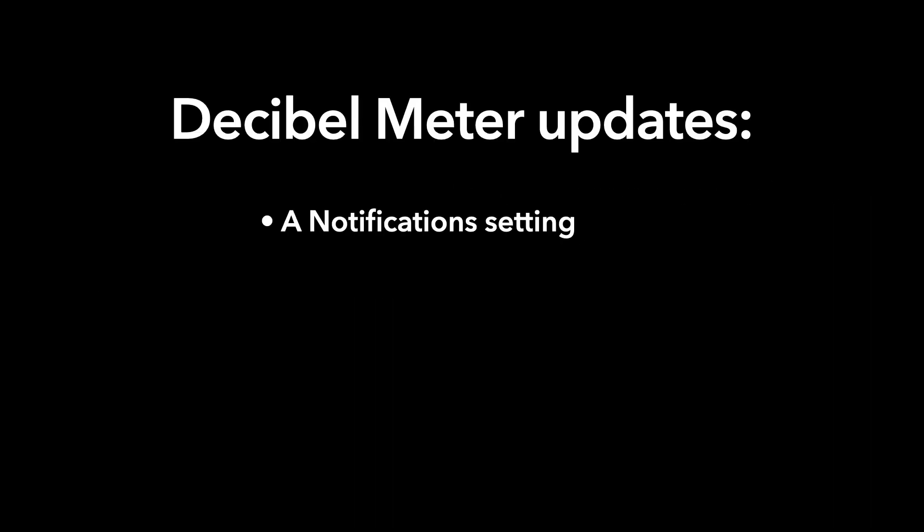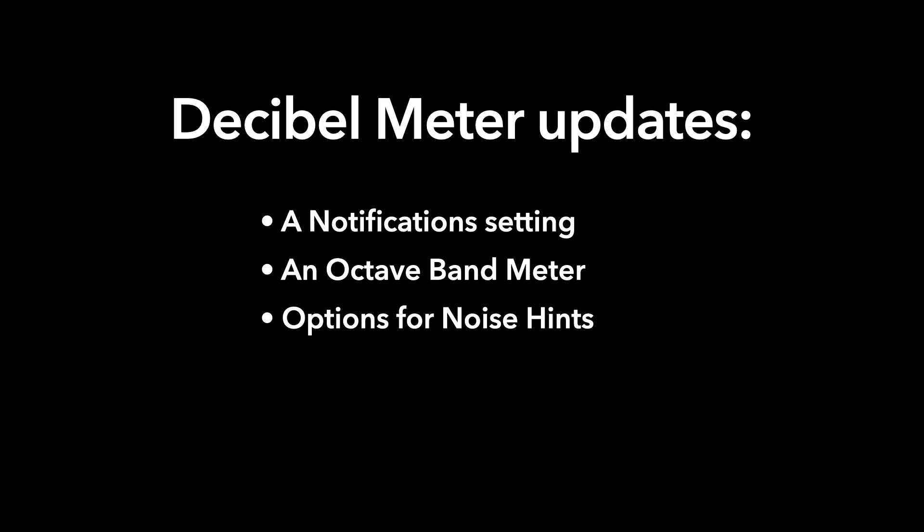The recent changes to the Decibel Meter app include these features: a notification setting, an octave band meter, different options for noise hints, and a bug fix in the reports. So let's go through these one by one.